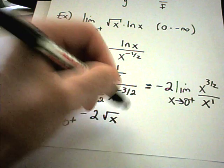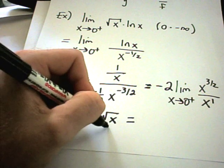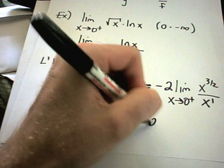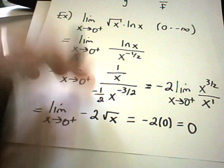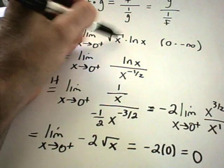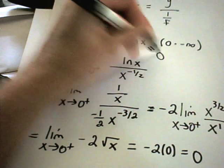And now as x approaches 0 from the right, well, square root of x is going to approach 0. So you have negative 2 times 0 or 0 as your answer. So the answer to the original problem is just going to be equal to 0.